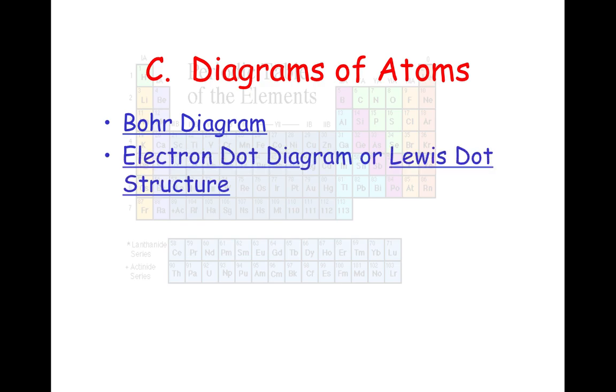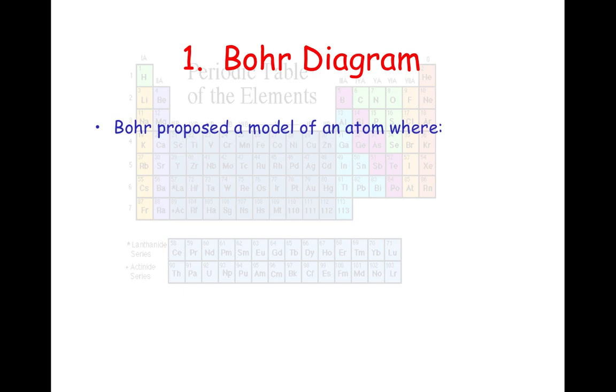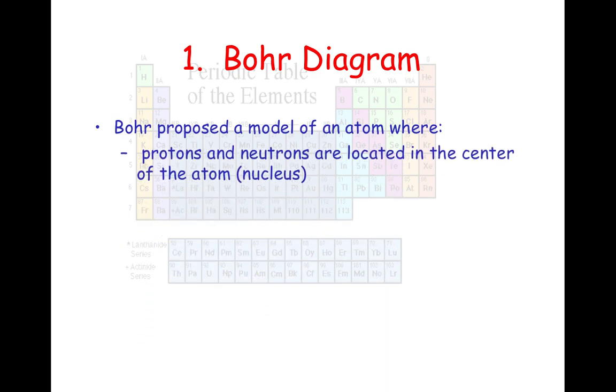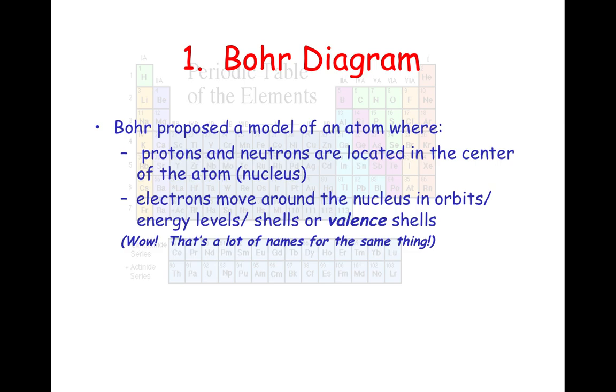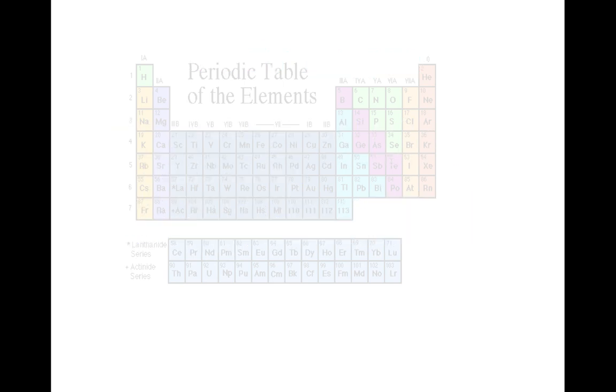Let's talk about the diagrams of the atoms. We have two diagrams we're going to talk about. One you've done a little bit of research on, especially those of you that researched Niels Bohr in the last class. The first one is our Bohr diagram, and the second one is our electron dot diagram, or we also call it the Lewis dot structure. But let's go ahead and start with Bohr.